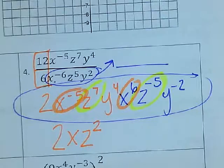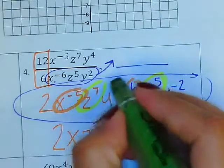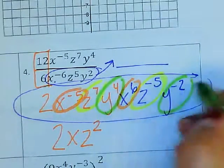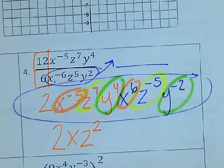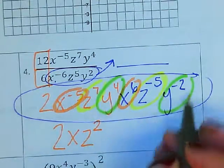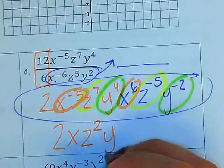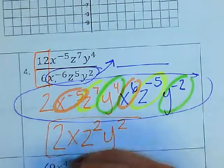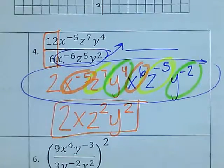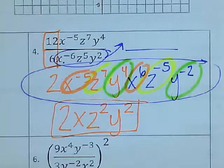And then lastly, the y, when I multiply y to the 4th times y to the negative 2, I add the exponents. And so 4 plus negative 2 would give me y to the 2nd power. And that will be the answer to that one.